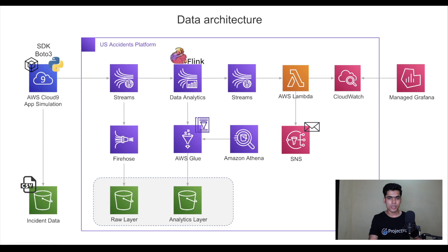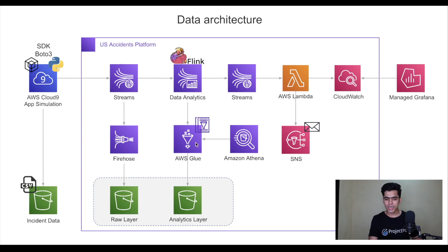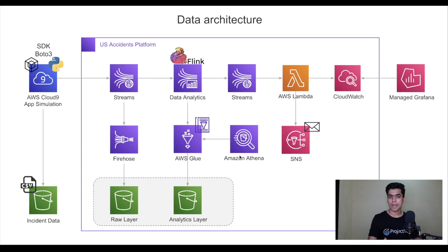We also use Apache Flink, which is used for real-time analytical processing — analyzing data behavior in real time. On top of that we use AWS Glue, which is a managed serverless ETL service. You can write transformation jobs such as adding two columns to create a new one, or computing averages or sums of columns. After transformation, you store the data in the analytical layer. The raw layer stores all raw data, and the analytical layer stores transformed data for historical analysis.